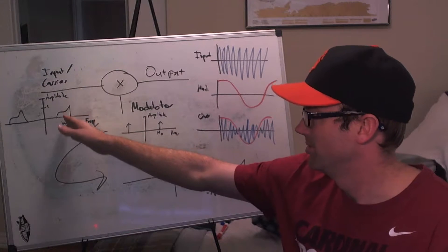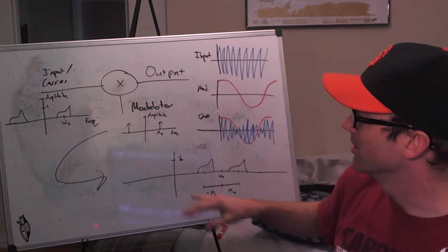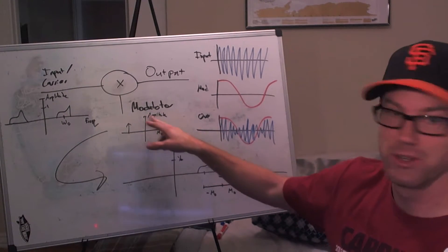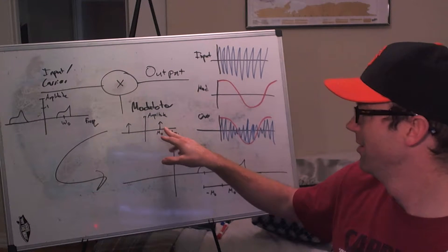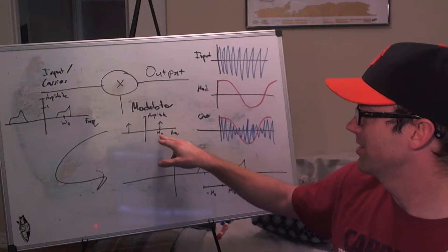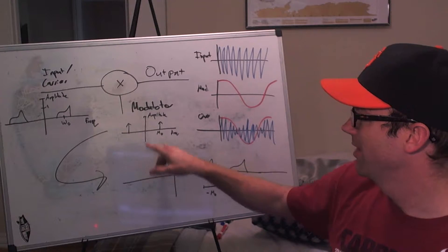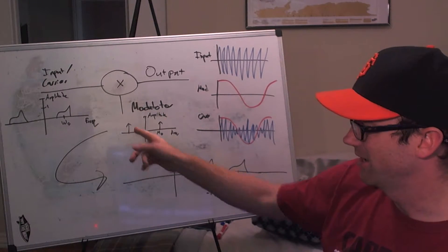So it's centered at what we're going to call w0. And then our modulator—for now, and this should look familiar—this is just a cosine, right? So it has frequency content at what we're calling m0, at both a positive and a negative point.